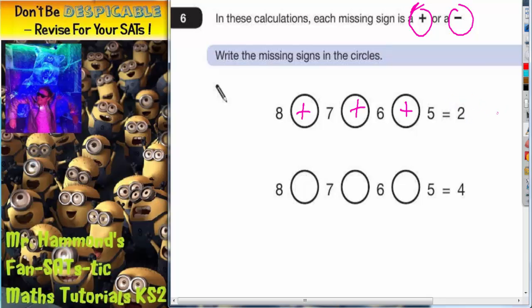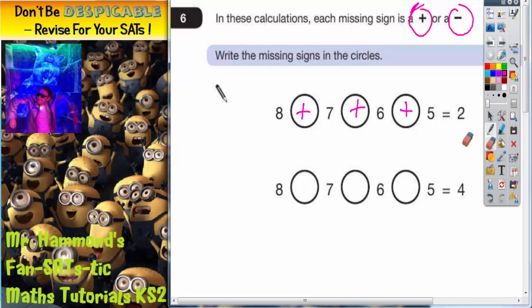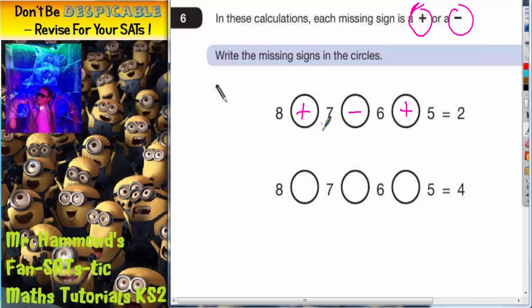So why don't we try changing one of the pluses for a minus. So let's try that. 8 plus 7 is 15, 15 take away 6 would be 9, and then we're going back up again because we're adding 5. 9 on 5 would be 14. That's still too far out.